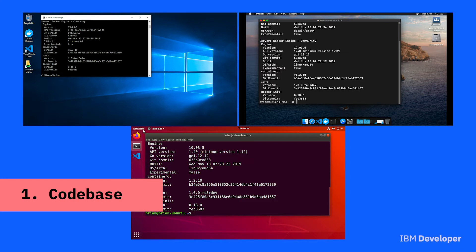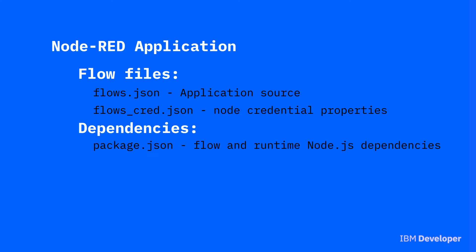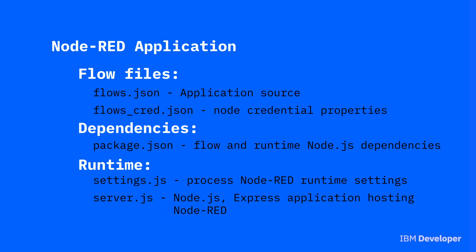A Node-RED application is made up of a number of parts. When you create the application in the editor, you create a flow file and optionally a credentials file. However, they need a runtime to operate. The runtime is defined by the package.json, which captures all of the Node.js packages needed for the Node-RED runtime and your flow. And then you need the runtime itself. You can customize the runtime, which is why we also check the runtime into the source control.